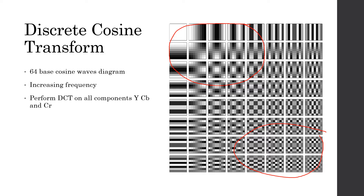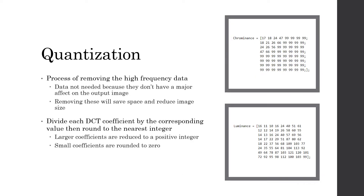We perform the DCT on all components: Y, CB, and CR. The next stage is the quantization stage. Quantization is a process of removing the high frequency data. The high frequency data is not needed because it has no effect on the output image, and this is where we can save space and compress the image. We do this by dividing each DCT coefficient by the corresponding value, then round to the nearest integer. We perform this operation on each block in all three components: Y, CB, and CR.